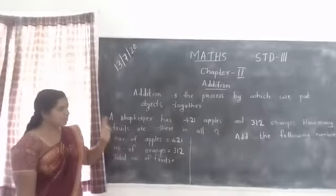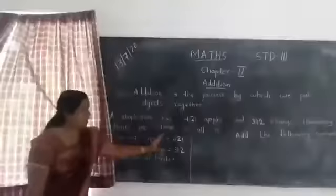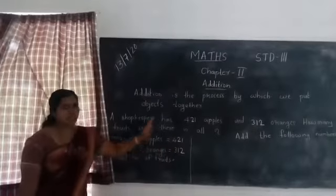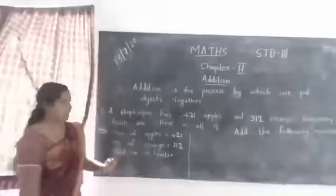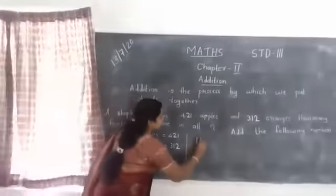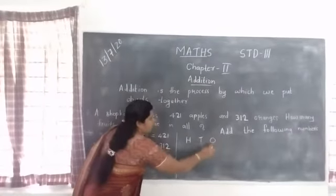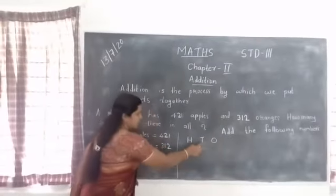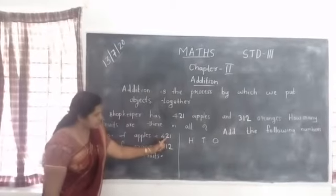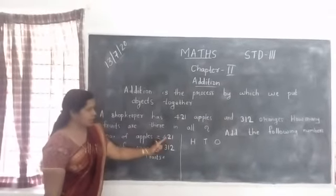Additionally, we are going to do the first step. Step 1: we have to arrange these two numbers according to the place value. Do you know the place value of these numbers? Ones, tens, and hundreds.